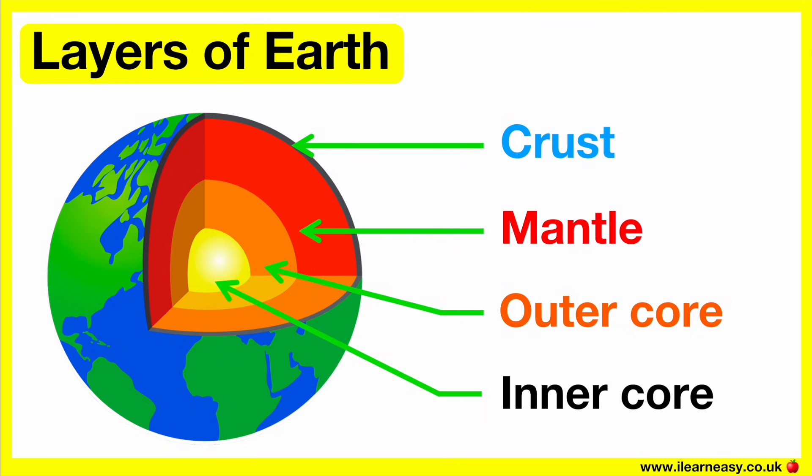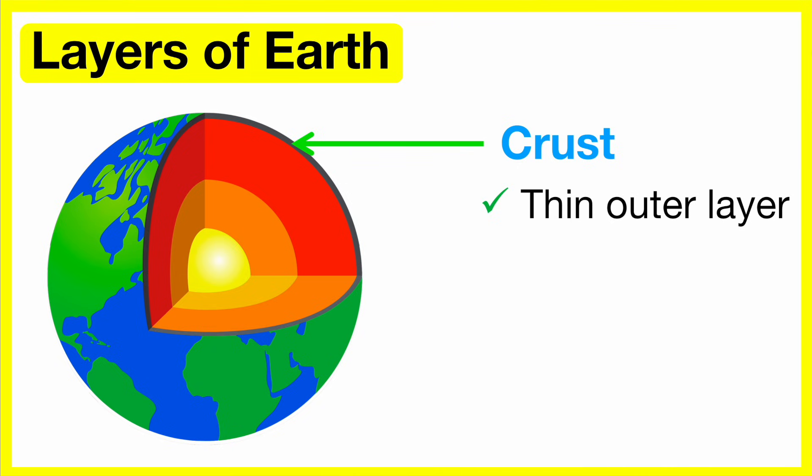So, to summarize, the Earth has four main layers. These include the crust, the mantle, the outer core, and the inner core. The crust is the thin outer layer of the Earth. It's the solid rock that we live on. It can either be continental or oceanic.